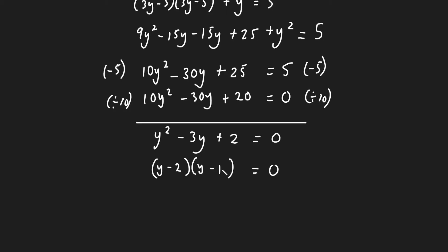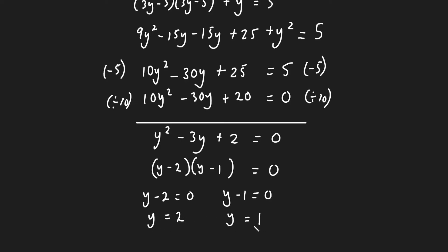Just quickly checking: y × y = y², y × (−1) = −y, (−2) × y = −2y, so −y − 2y = −3y. And (−2)(−1) = +2. So this is definitely the correct factorization. I then solve by setting each factor equal to 0: y − 2 = 0 gives y = 2, and y − 1 = 0 gives y = 1. The fourth step is done — we've found our values for y.